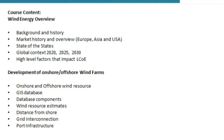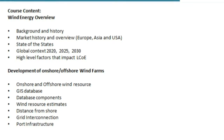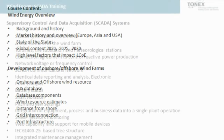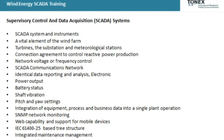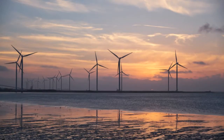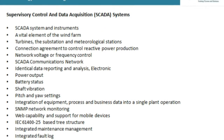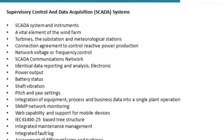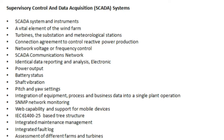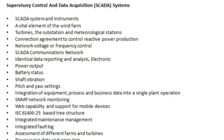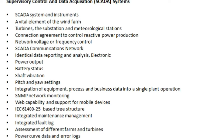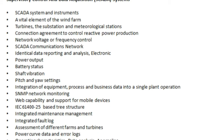The GIST database section covers database components, wind resource estimates, distance from shore, grid interconnection, and board infrastructure. The SCADA systems section covers SCADA system instruments as a vital element of the wind farm, including turbines, the substation, and meteorological stations, as well as connection agreements to control reactive power production and network voltage or frequency control.